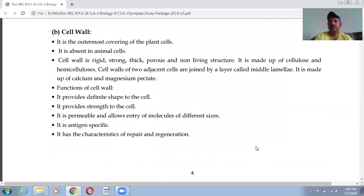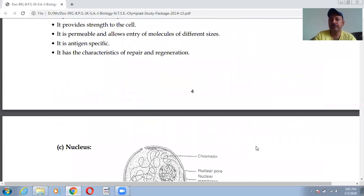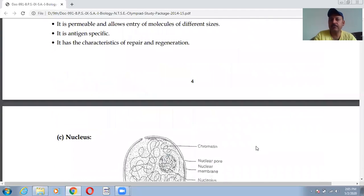Next is cell wall, which we have already discussed and it is present in only plant cells. It is not present in animal cells. Outermost covering of plants and absent in animals. Rigid, strong, porous, thick and non-living structure made up of cellulose and hemicellulose. Functions are: provide definite shape because it is very hard, provide strength, permeable and allows entry of molecules of different sizes, antigen specific and has characteristic of repair and regeneration. So these are the characteristics of cell wall.